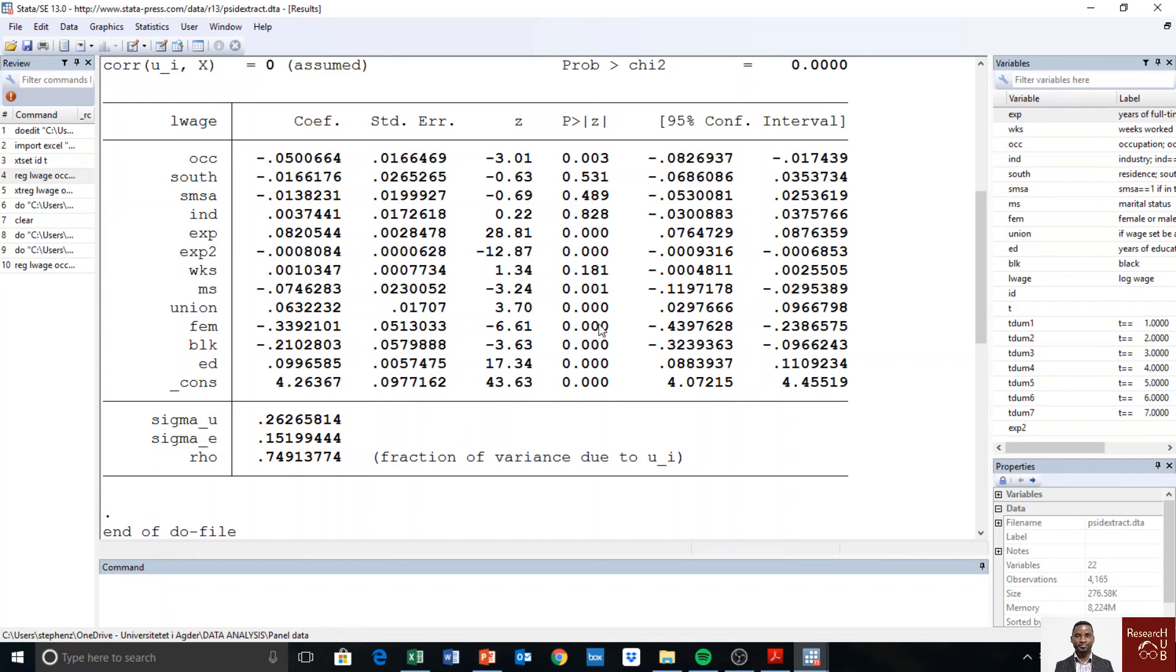We have sigma u and then sigma e and then rho. Sigma u is the ui, this is the estimate, the variance, the standard deviation of the ui. And then sigma e which is the vit in our case, this is the standard deviation for that. And then we have rho. Rho is the proportion of variance due to this ui. How do we calculate rho? It's just the variance of this, so let me show it in a moment.